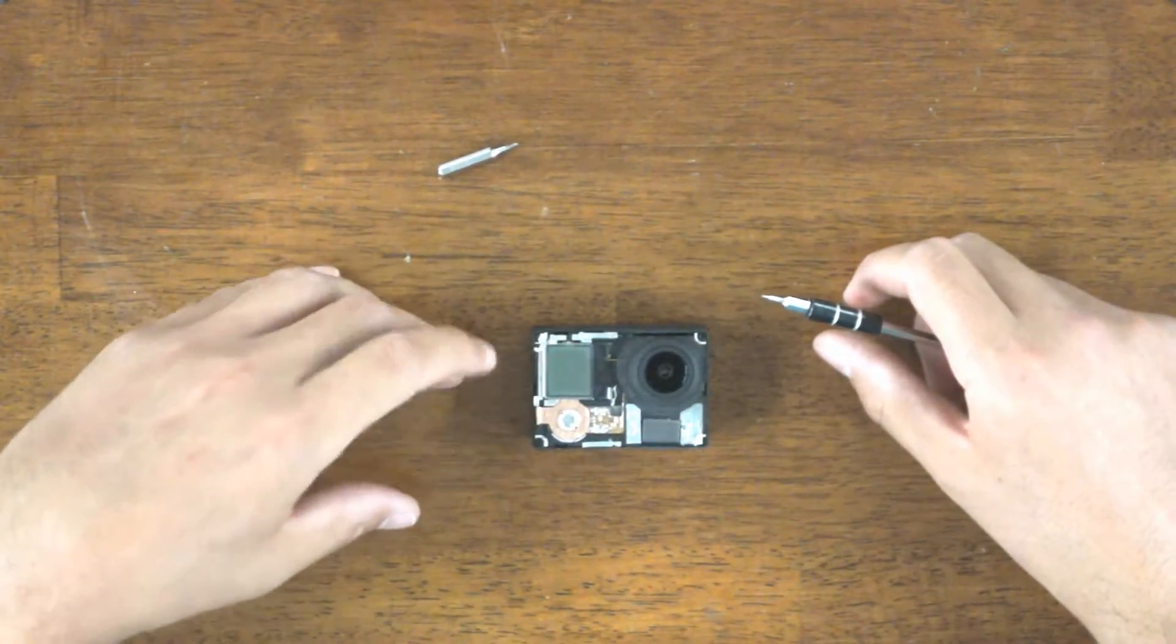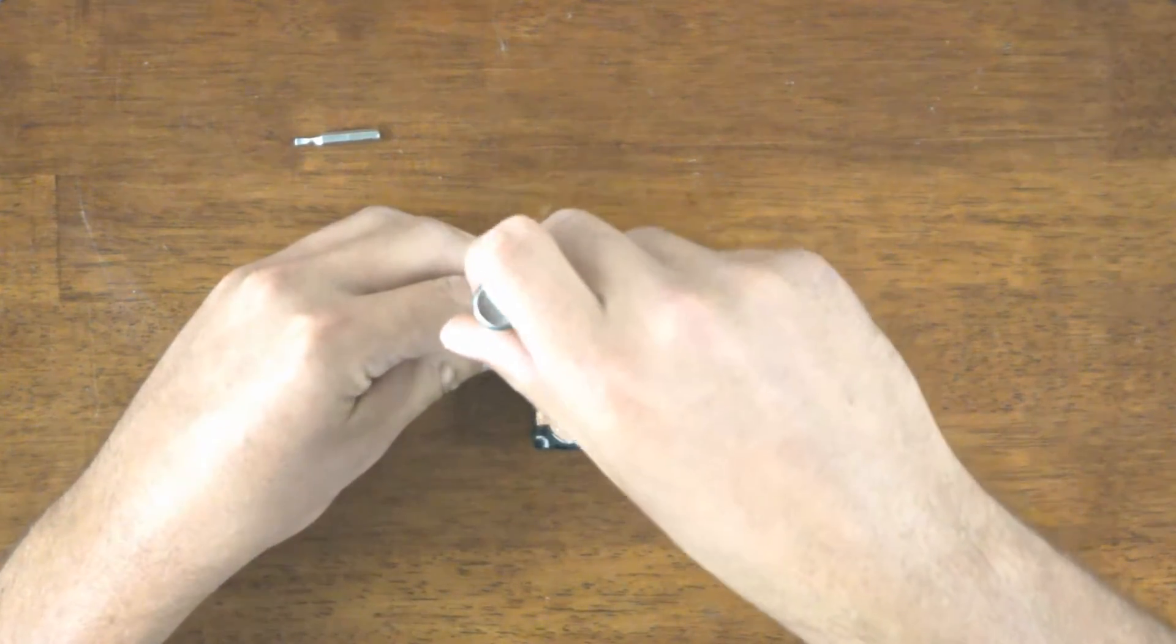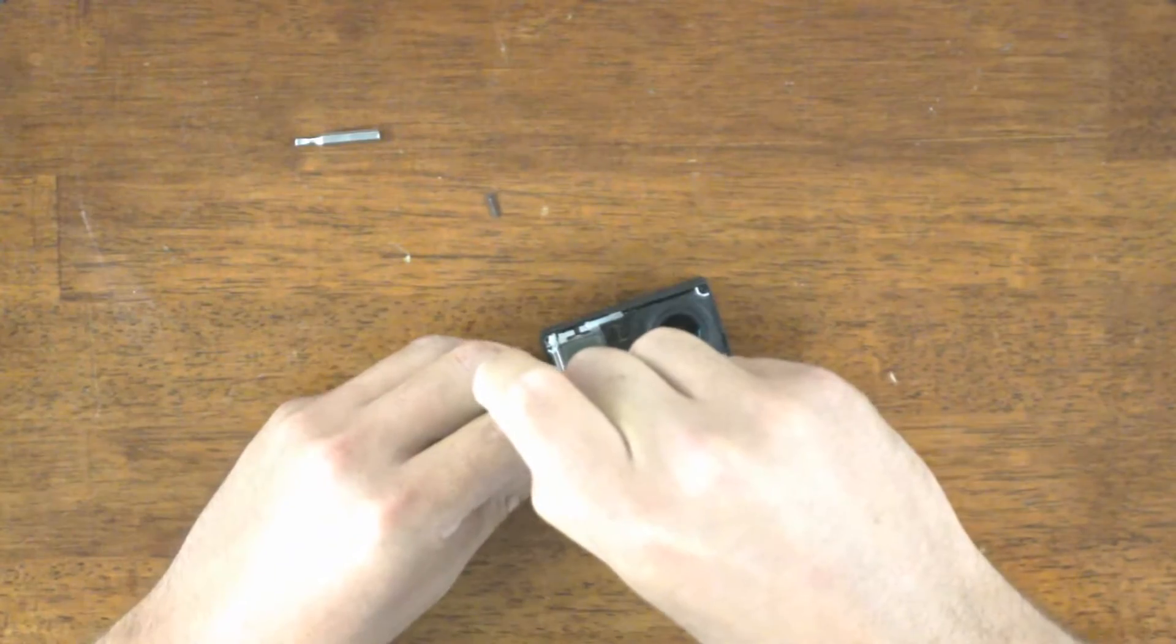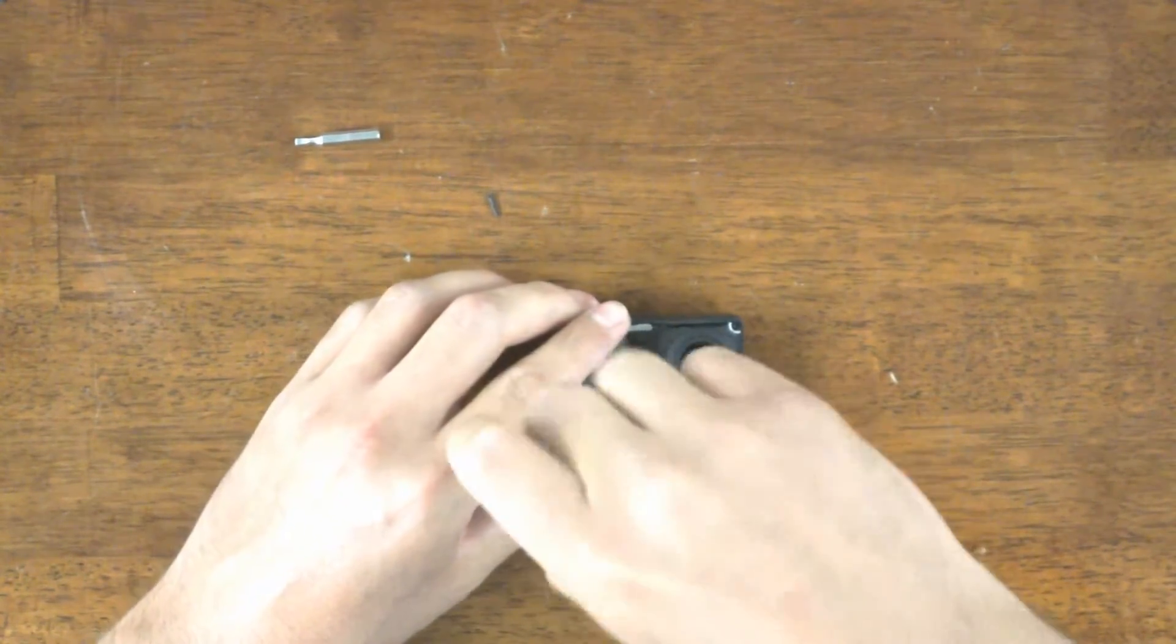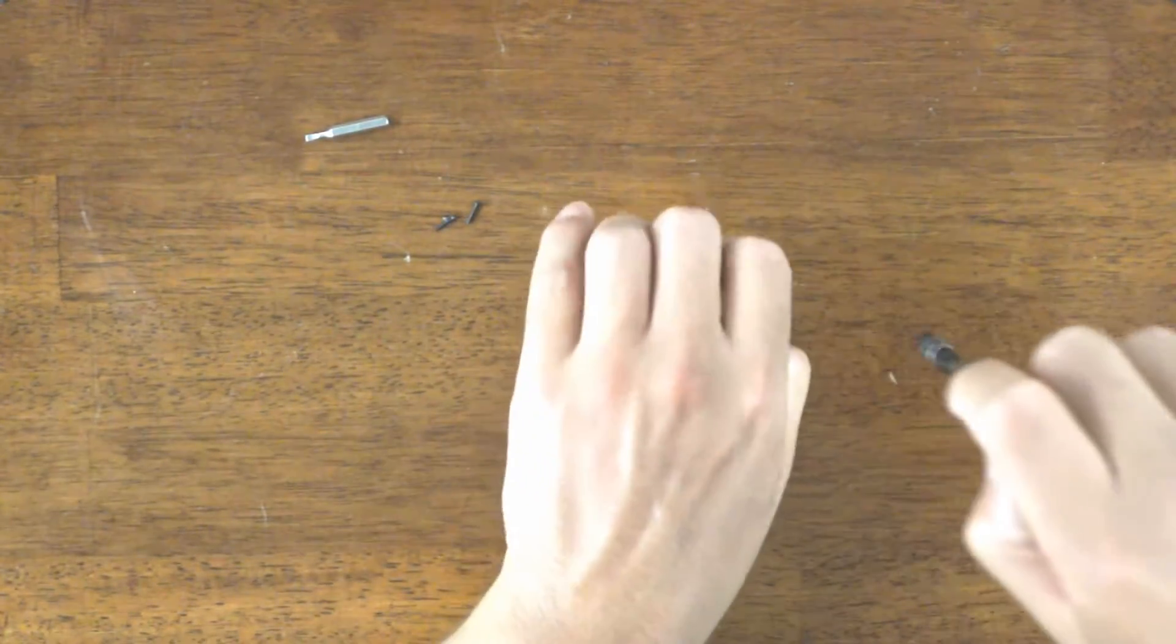There on the HERO3 Black, there are four T4 Torx screws along the corners. On the 3 Plus Black, there are four Phillips screws.